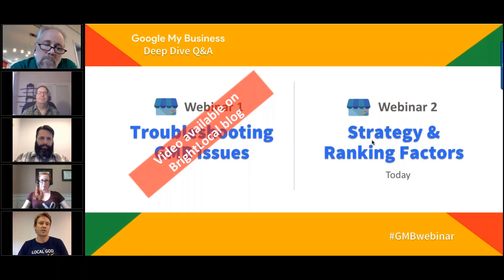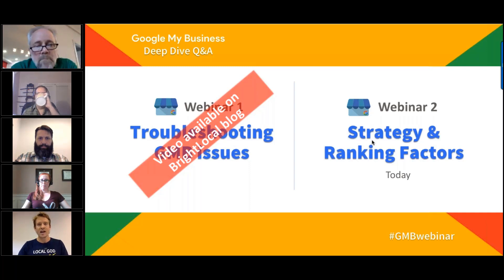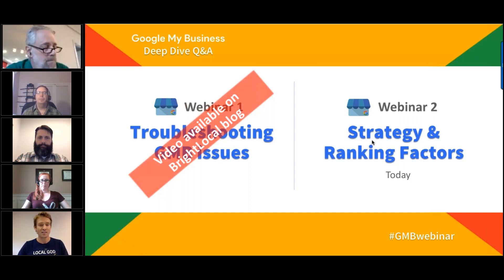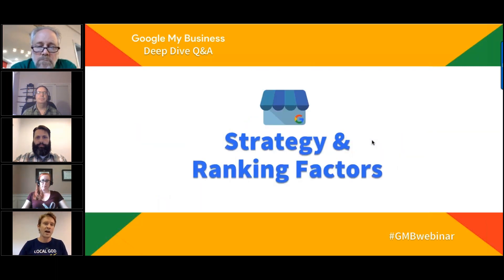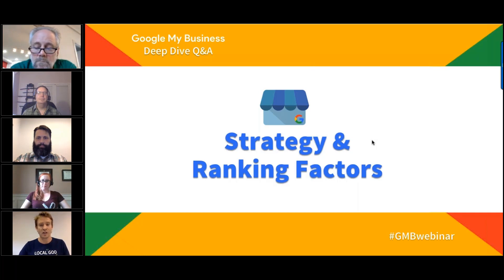It's actually the second webinar in a two-part series. Last week we looked at troubleshooting Google My Business issues. We tackled around 22 questions in great detail, and if you missed that webinar you can access the recording on the Bright Local blog. The response we got on Twitter was incredible, so please do check that out. In today's webinar we're looking specifically at strategy and ranking factors, and I'm delighted that we have our four panelists with us today.